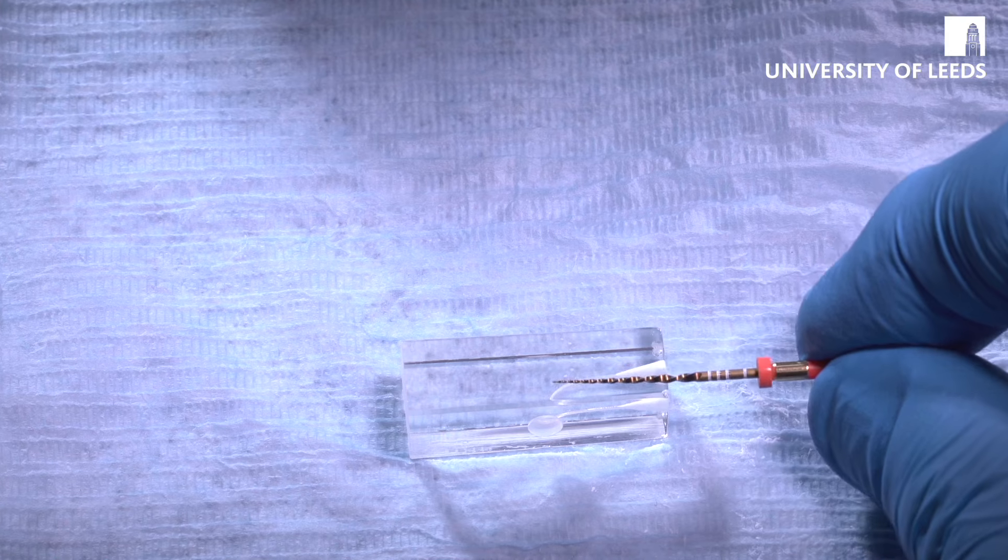Now here I'm going to depart from the standard manufacturer's protocol because WaveOne Gold is described as a single file system. But WaveOne Gold, which is this file here, the primary file, is quite large - the tip is a size 25. So if you've got a tight or sclerosed canal, it's very difficult to get the file to engage straight away. So it is beneficial to use some sort of coronal shaping device or orifice shaper before you go in with the WaveOne file.